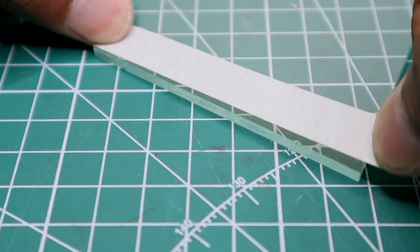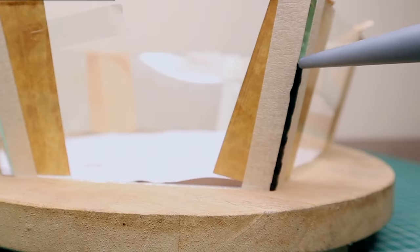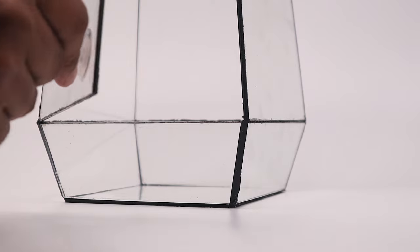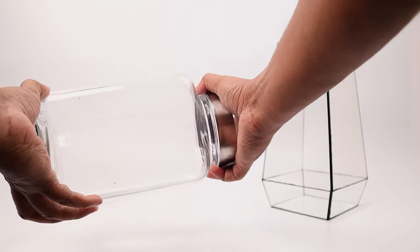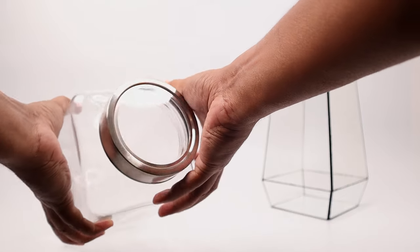This geometric enclosure was made by me using glass and silicon. I will leave a build process video link in the description. You can use any available glass container for this project.